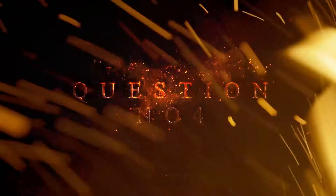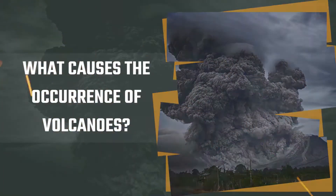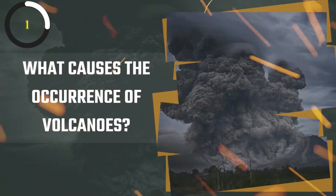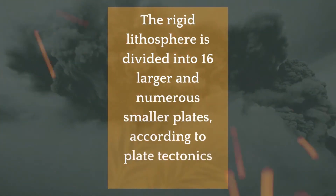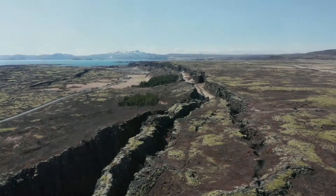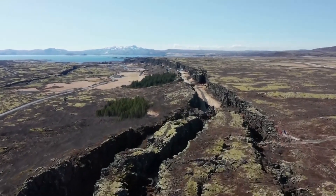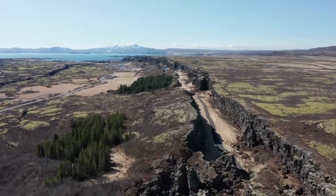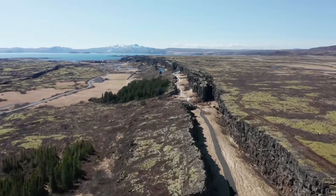Question number four: what causes the occurrences of volcanoes? The rigid lithosphere is divided into 16 larger and numerous smaller plates according to plate tectonics theory. All of these plates are in slow motion. Volcanoes generally exist where tectonic plates are converging or diverging.